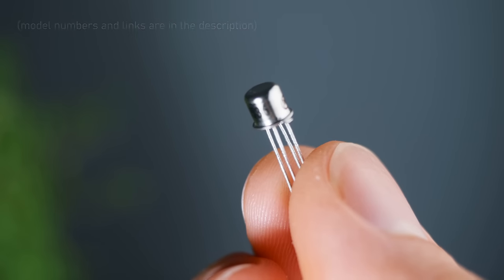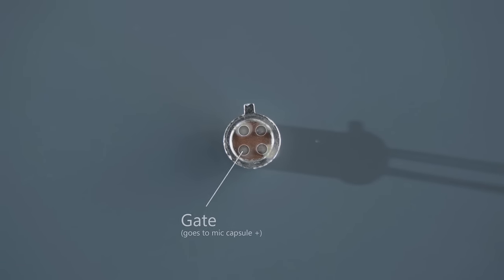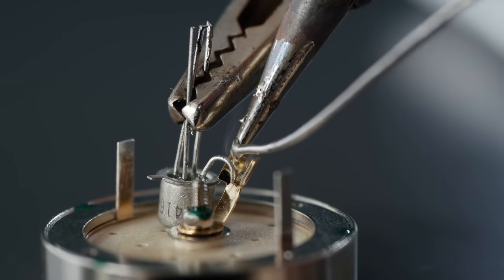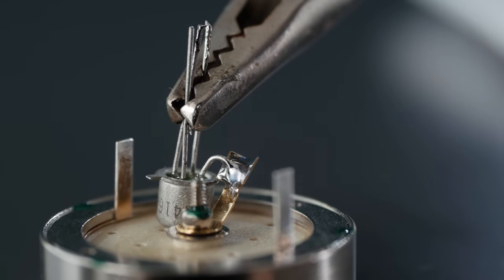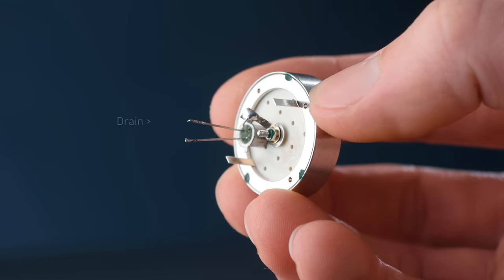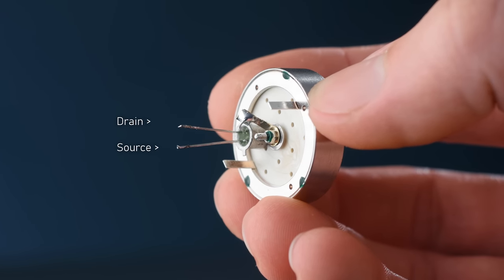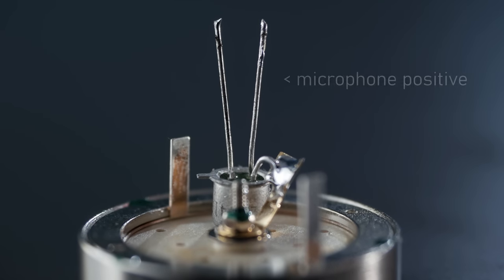Thankfully, suitable transistors are readily available, and hooking it up just requires the leg labeled as gate on the datasheet to be soldered to the capsule's central tab like so. The leg next to it won't be used, so I just chopped it off to avoid confusion, leaving the remaining legs known as drain and source. Because of the way the transistor will work in the circuit, I'm going to refer to these legs as microphone positive and microphone negative, as they'll both be outputting the same signal but at opposing phases, which will be handy for the preamp circuit we'll be building later.